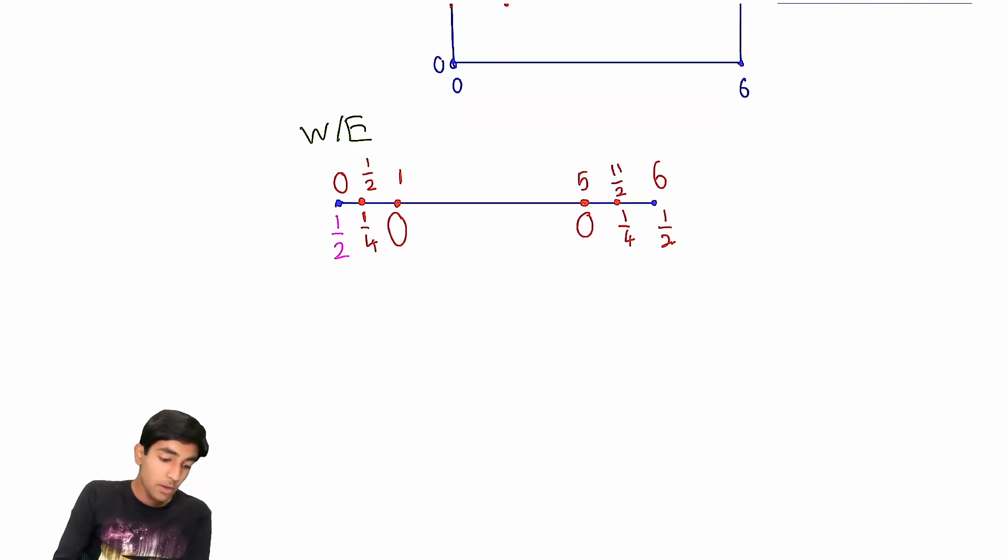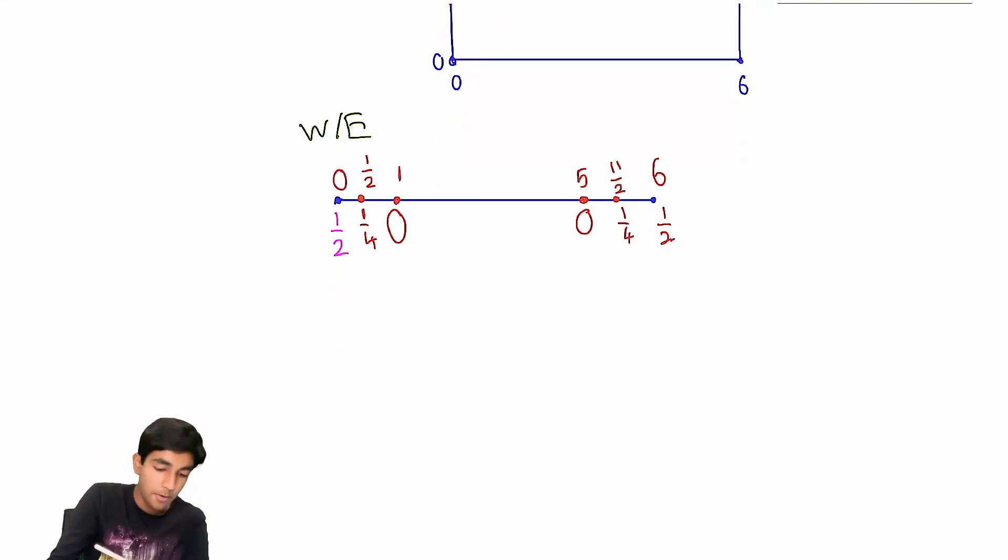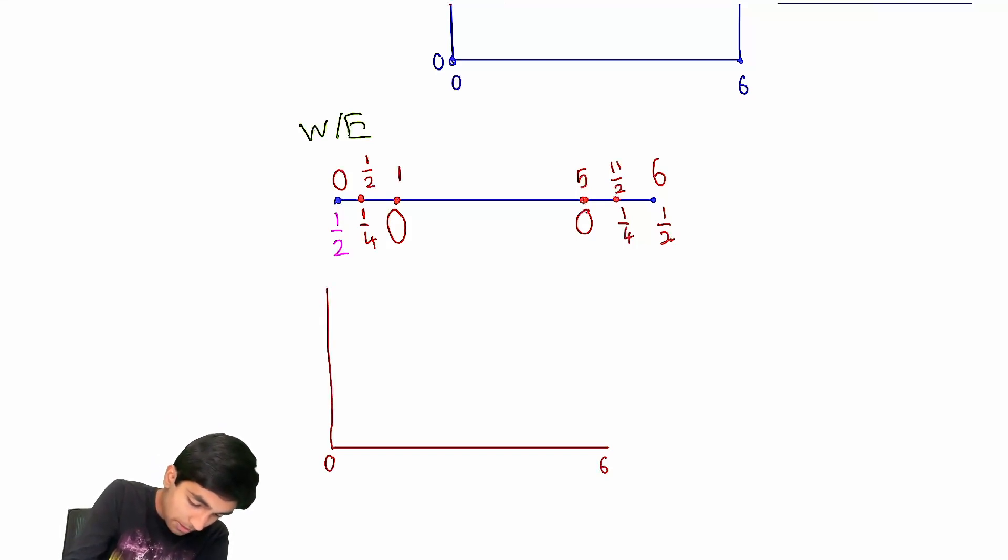So, now, it's just a matter of doing some geometric probability. Let's just draw a nice little geometric probability thing. So, this is zero, this is six. Over here, this is the maximum probability. Maximum is one. This is the probability.